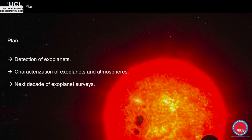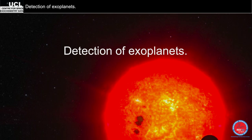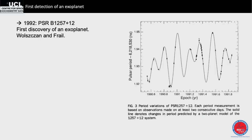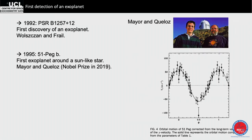First, detection of exoplanets. Did you know that the first detection of an exoplanet is actually not by Michel Mayor and Didier Queloz, but by these two researchers in 1992 around a pulsar — not around a normal star? Then Mayor and Queloz got the Nobel Prize for 51 Peg b, discovered in 1995. They found those two planets based on the timing of pulsar pulsations, which were varying.